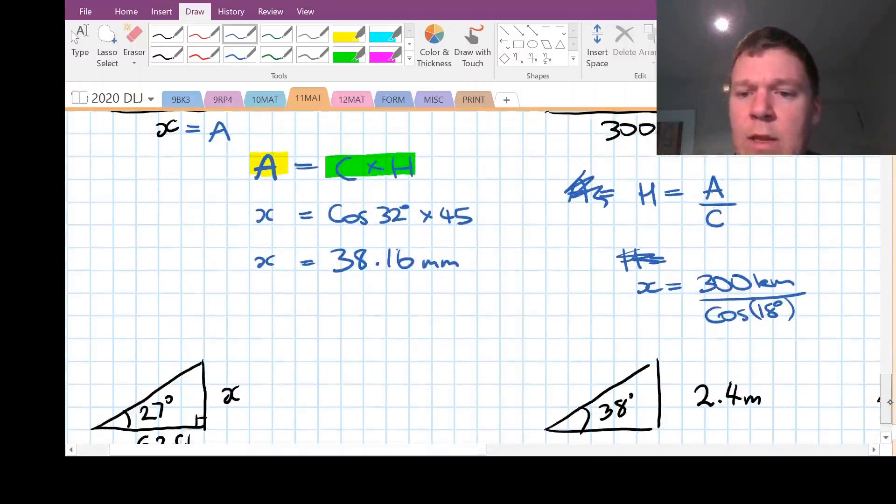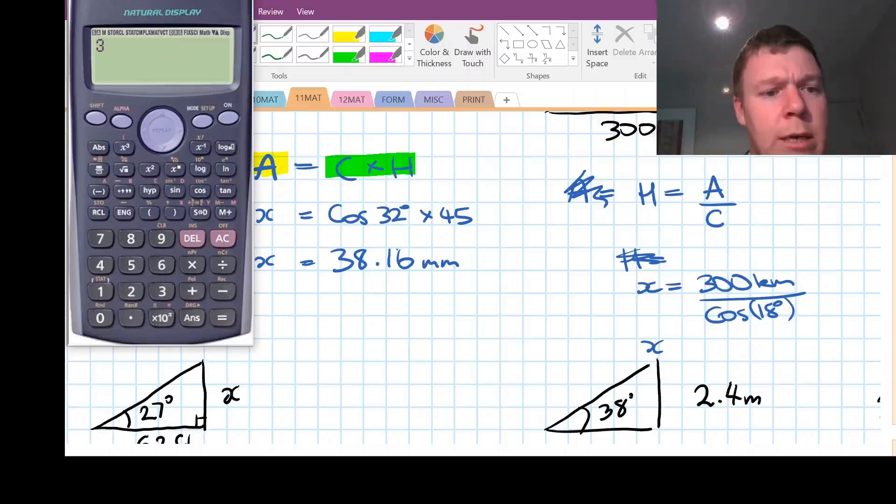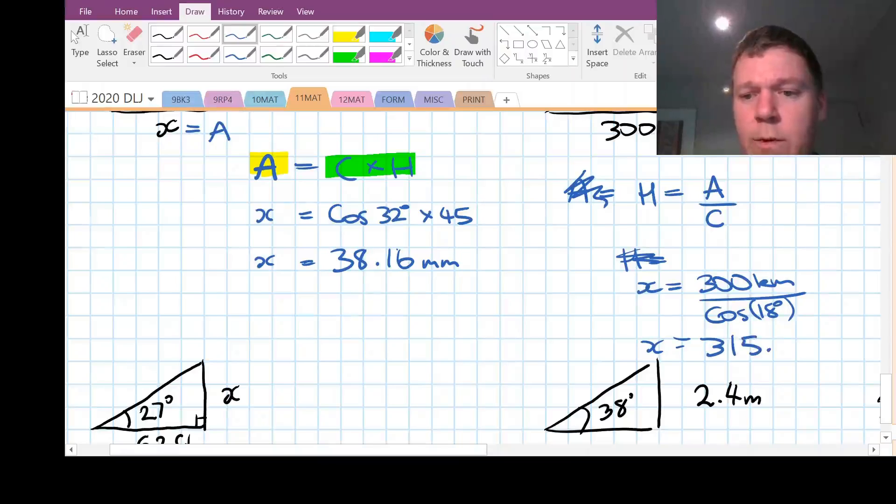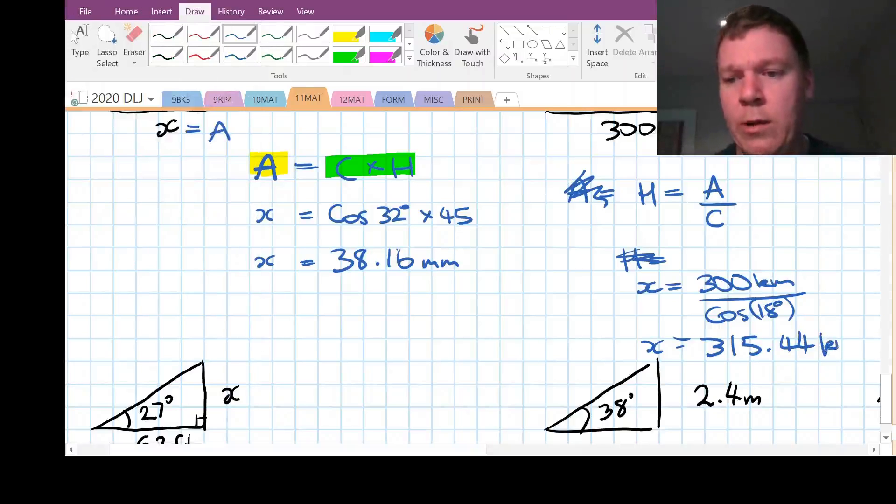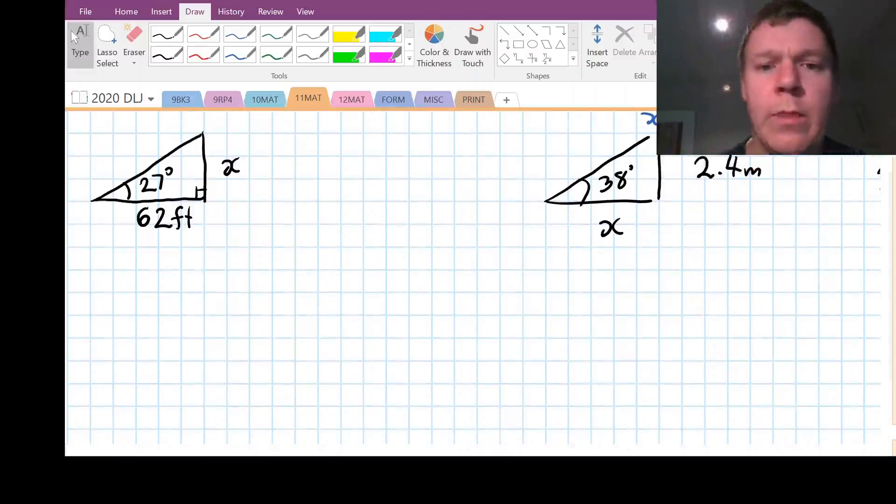38.16 and our measurement is in millimeters. And you do enough of these problems you sort of get the hang of what they should look like. Does my answer make sense? Well it's on the short side and it's on a sloping angle so yeah I would say that's pretty accurate. Okay, next one.